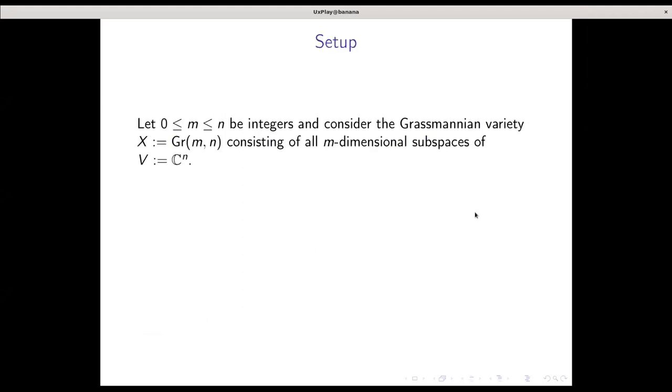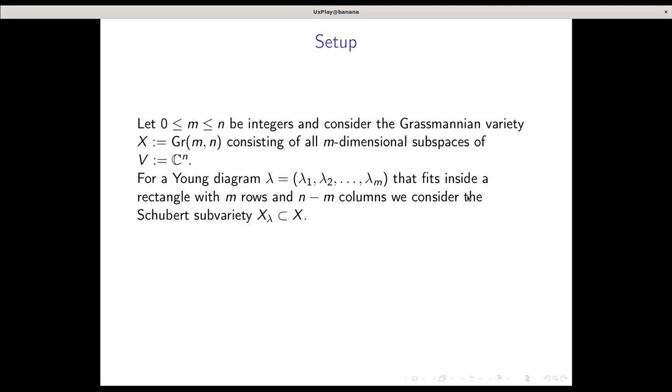My setup is a classical one. I will consider the Grassmannian variety X, which I denote by gr(m,n), of n-dimensional subspaces of C^m. My Schubert varieties are indexed by Young diagrams, so I'll denote them lambda, and I'll require that they fit inside a rectangle with m rows and n-m columns. Given this indexing, I asked the natural question: how does it influence the isomorphism class of X_lambda? Is the Young diagram lambda a complete invariant of X_lambda up to isomorphism?